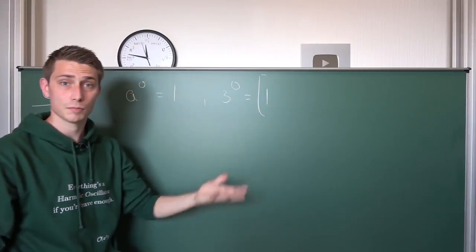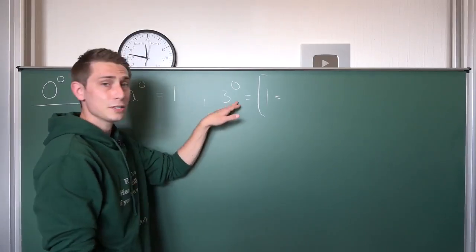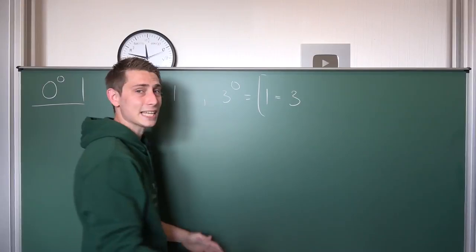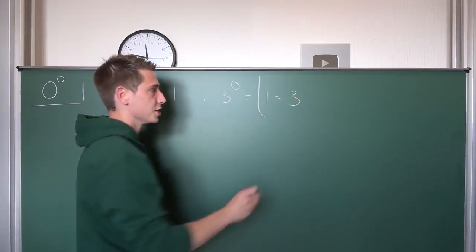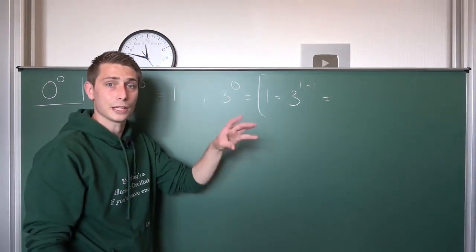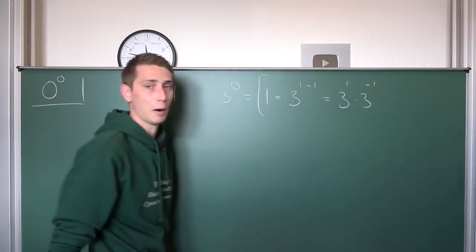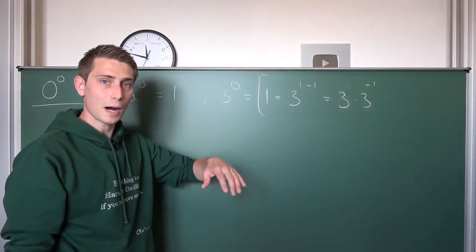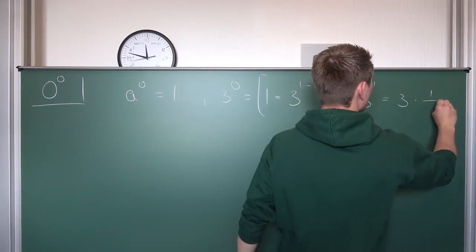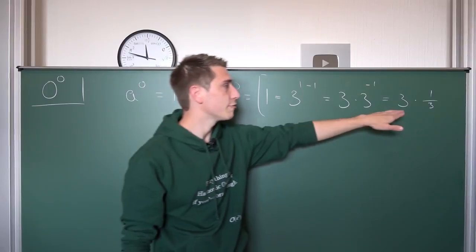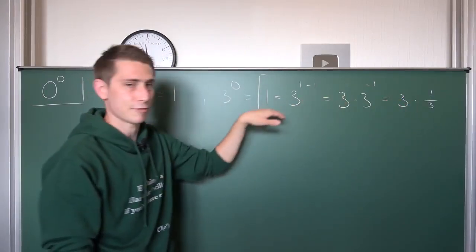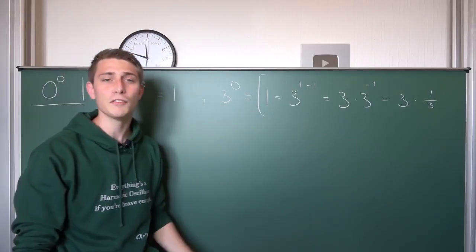There's actually another way you could define it using fractions. 1 is nothing but 3 to the zero power, and zero is nothing but 1 minus 1. We can use the exponentiation rule for same base and different exponents, leaving us with 3 to the first power times 3 to the negative first power. Something to the first power is just itself, and 3 to the negative first power is nothing but 1 third. So this is 3 times 1 third — that's 3 out of 3 parts of a cake, which is still your 1 cake. 3 over 3 is 1. You can do the same for 5 to the zero power: it's 5 over 5, which is 1.